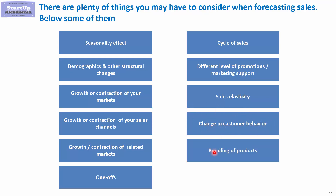Another thing to consider is bundling of products — this applies both to historical data and future forecasts. Products sold independently and in bundles will behave differently, so if there is a change in that, you should account for the bundling or unbundling effect in your sales forecast.